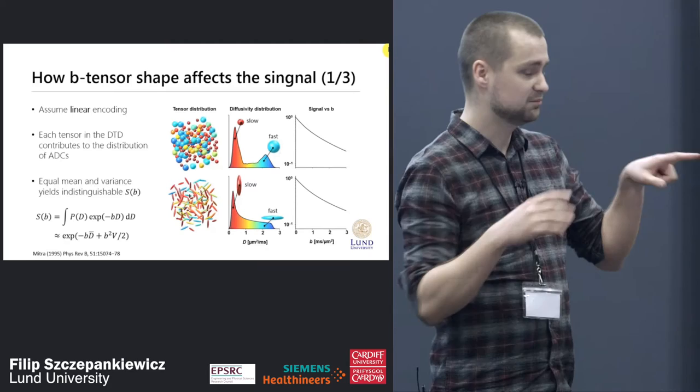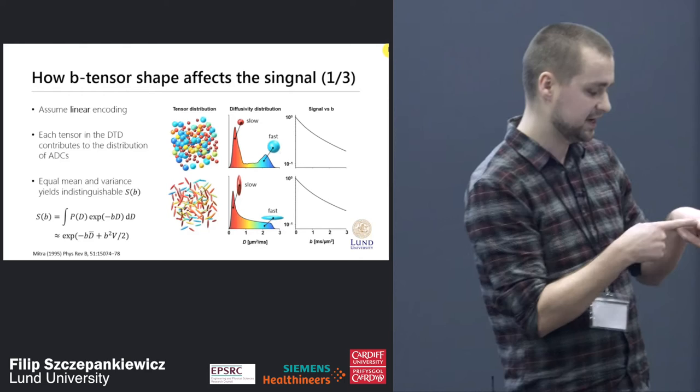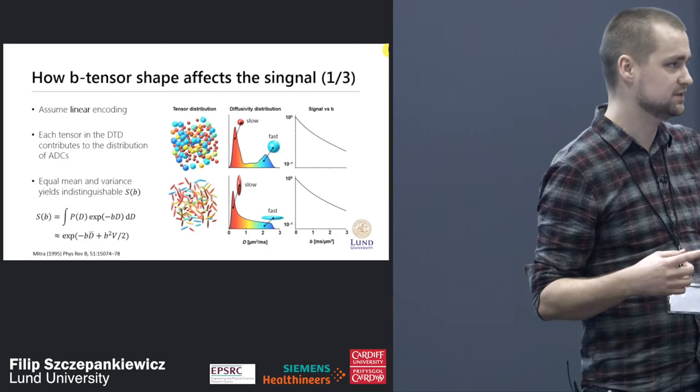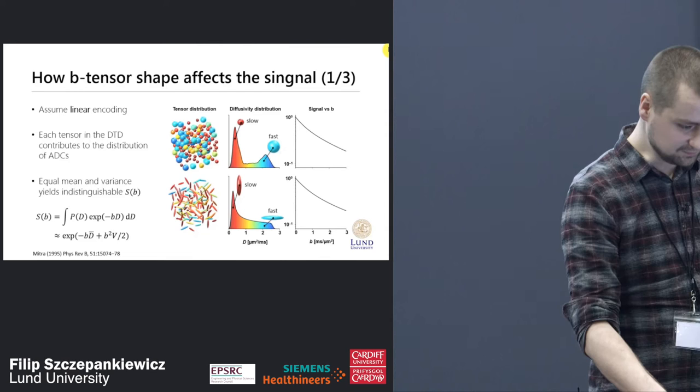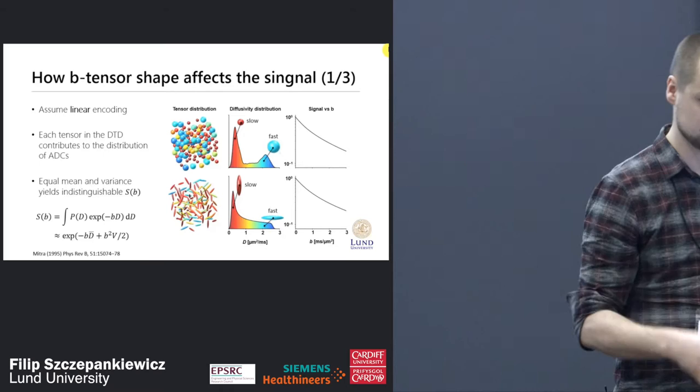Why do we get the exact same signal in the randomly oriented anisotropic case? Some microtensors will be aligned parallel with the linear encoding and appear as fast diffusivity domains; some will be aligned perpendicular contributing low diffusivity; and all other directions contribute intermediate cases. These two distributions have the same expected value and variance, so they contribute the same signal.